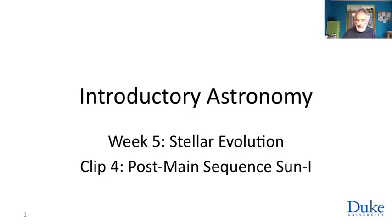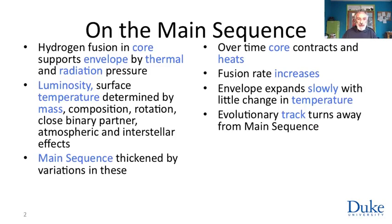So, the Sun has joined the main sequence. Let's remind ourselves of what that means. That means we have a core in which hydrogen is fusing, generating helium. This is supporting the rest of the envelope by thermal and radiation pressure.